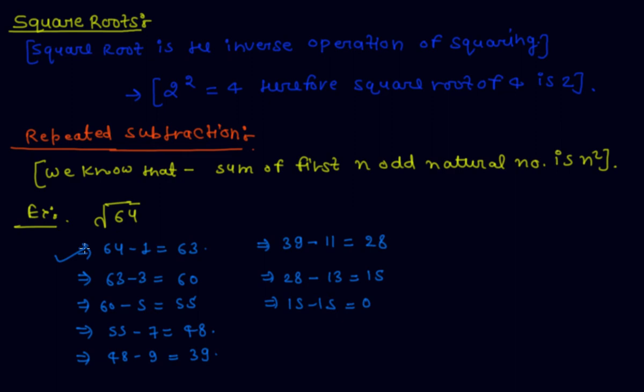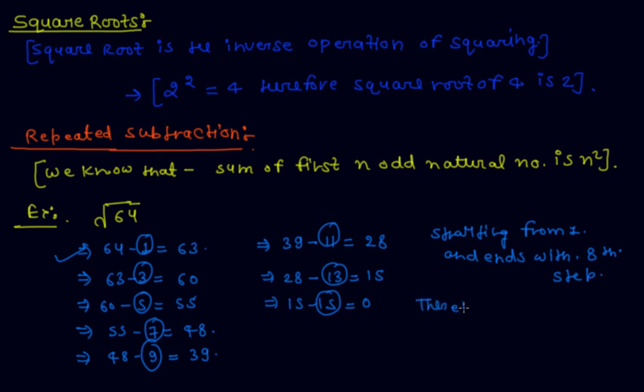15 minus 15 is equal to 0. So now from 64, we have subtracted successive odd numbers 1, 3, 5, 7, 9, 11, 13, 15 - successive odd numbers starting from 1 and ending with the 8th step. So 8 is the answer.